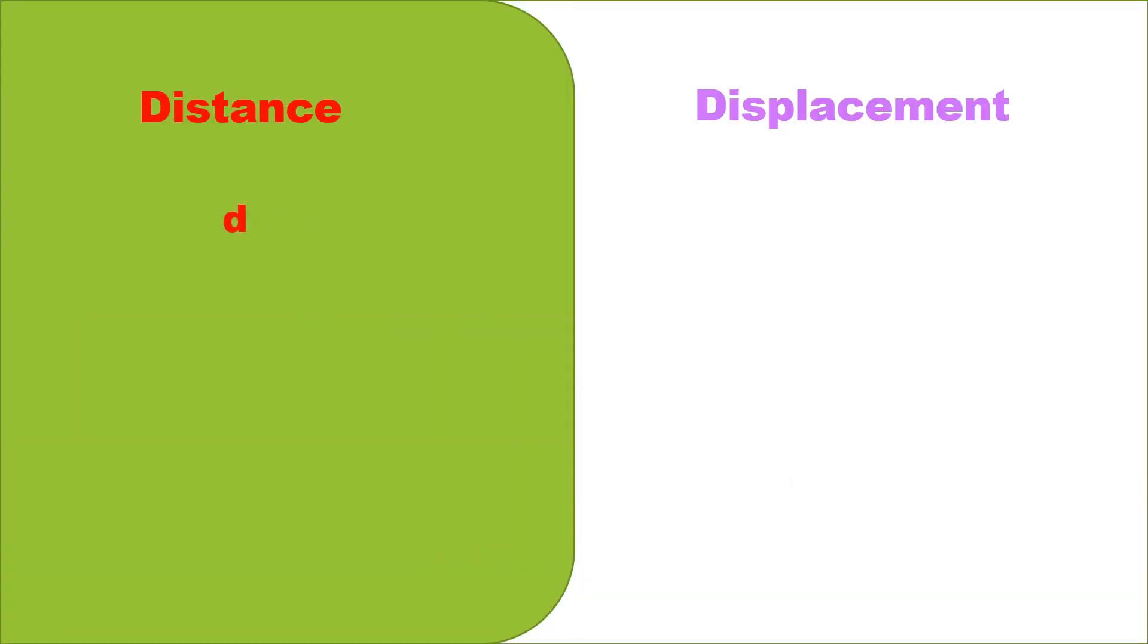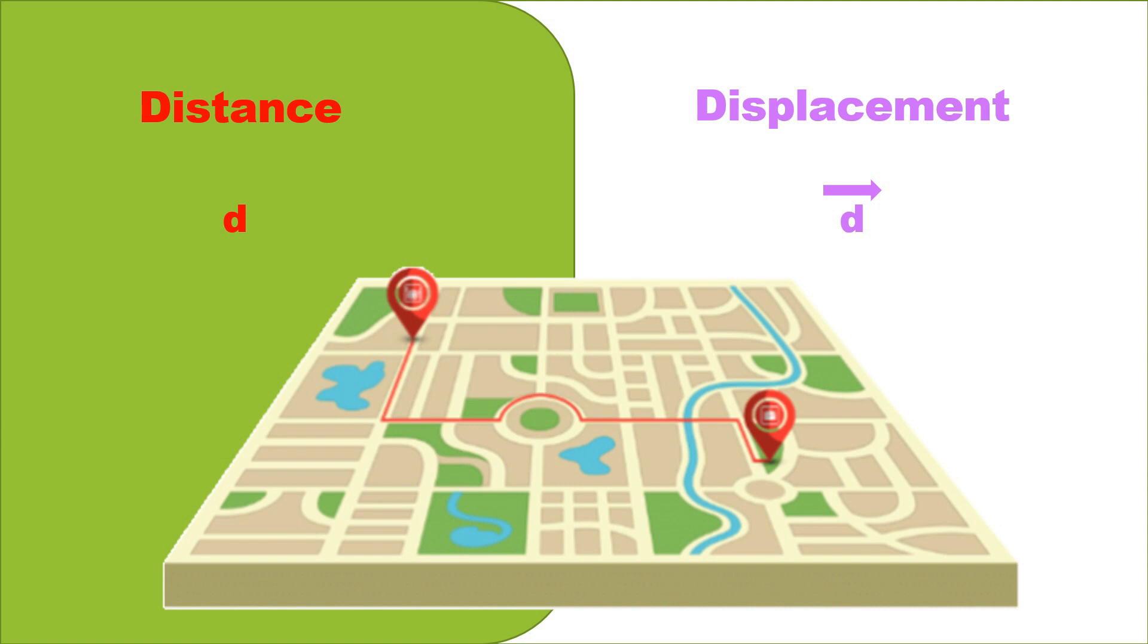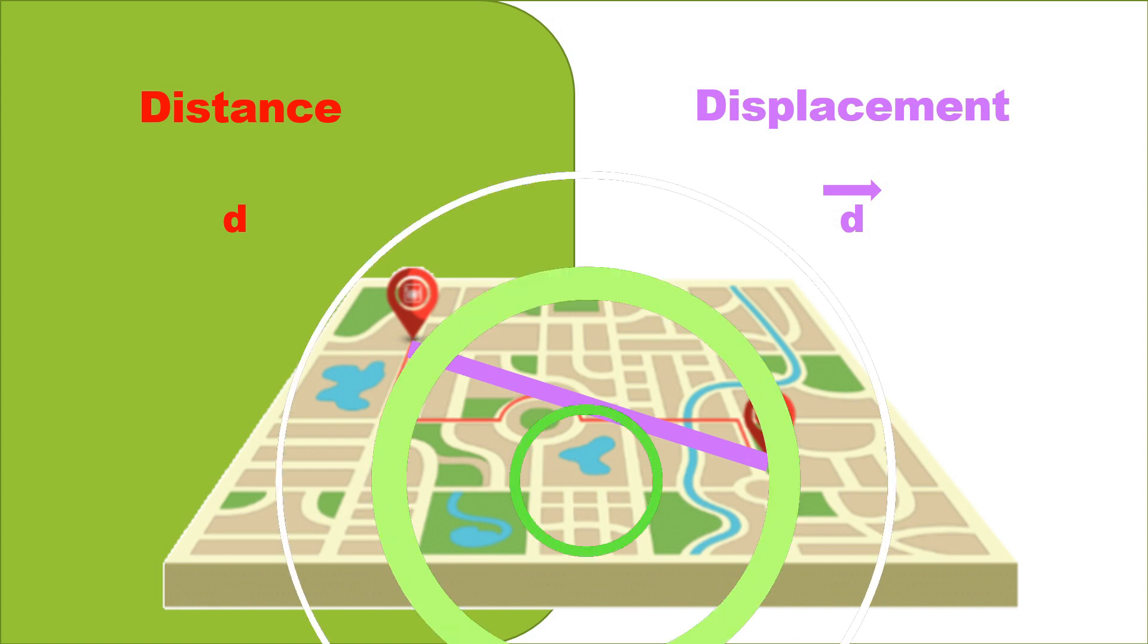Distance and displacement are similar with their units and symbols. But for displacement, we place an arrow on top of its symbol to indicate that it's a vector. Looking again at our map, can you imagine what's our distance and displacement? The red line is our distance, and if you imagine a straight line between the two points, then that's your displacement. Amazing!